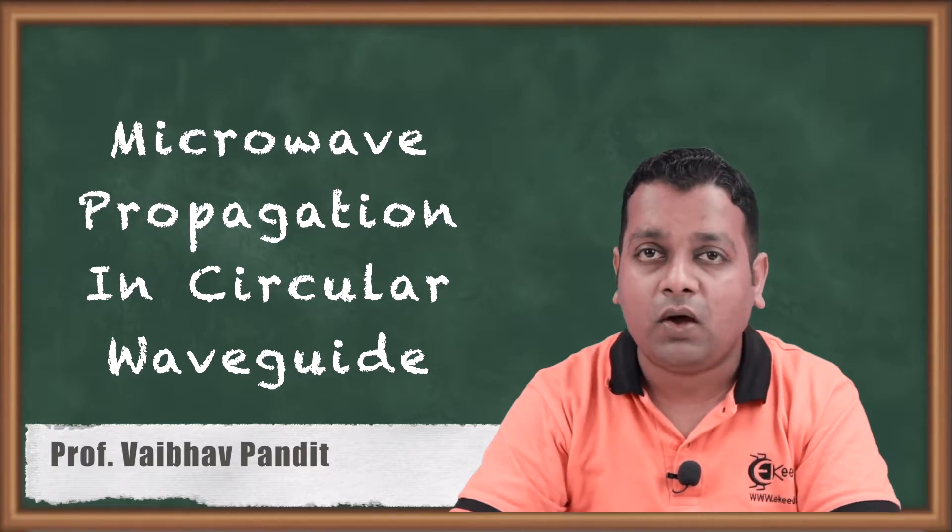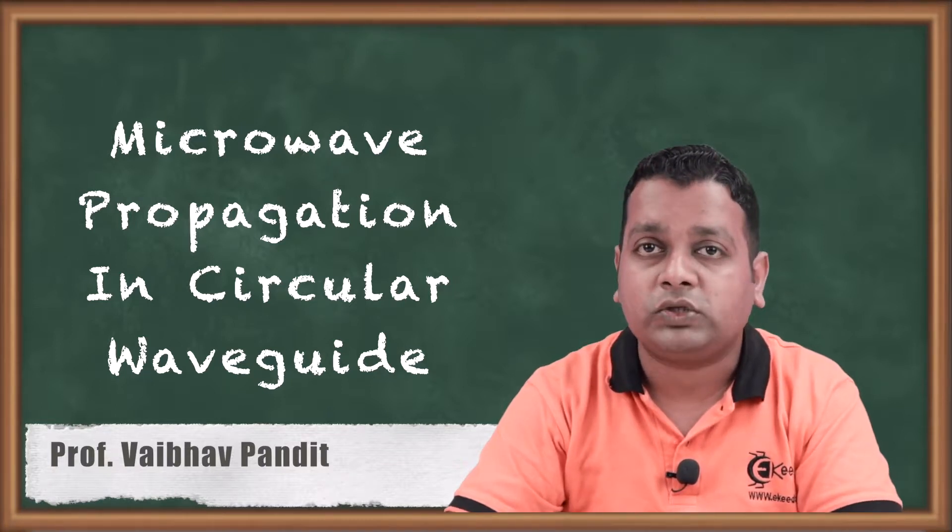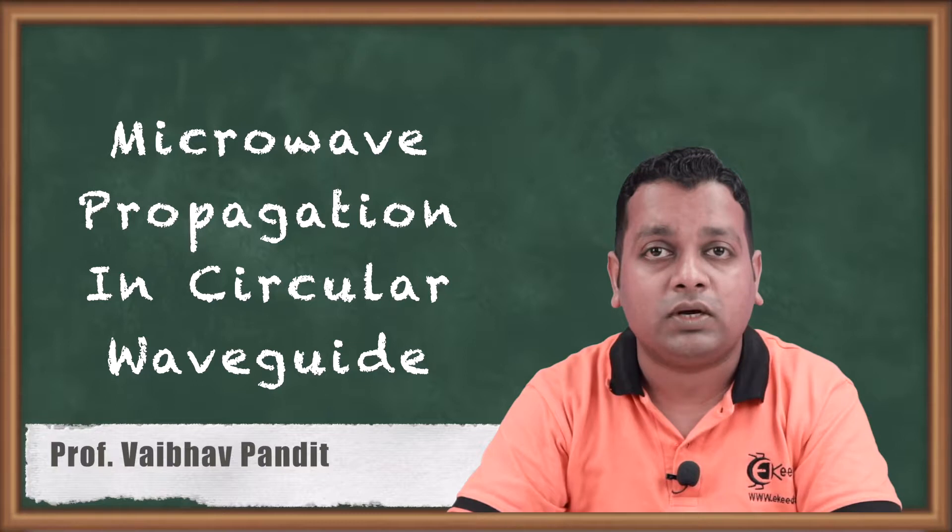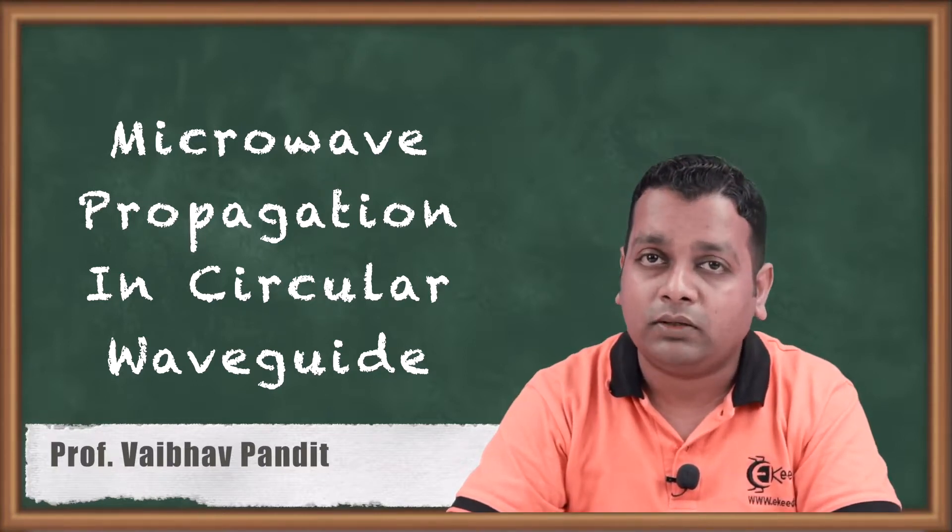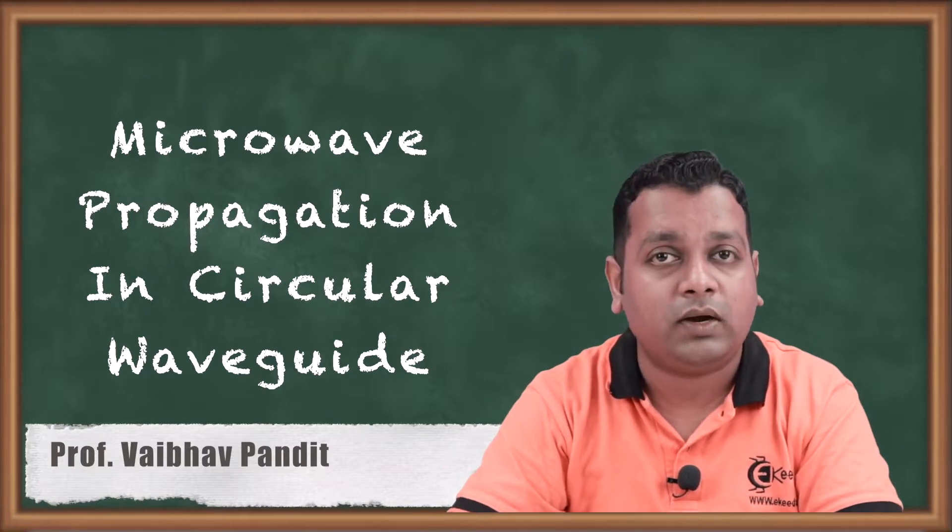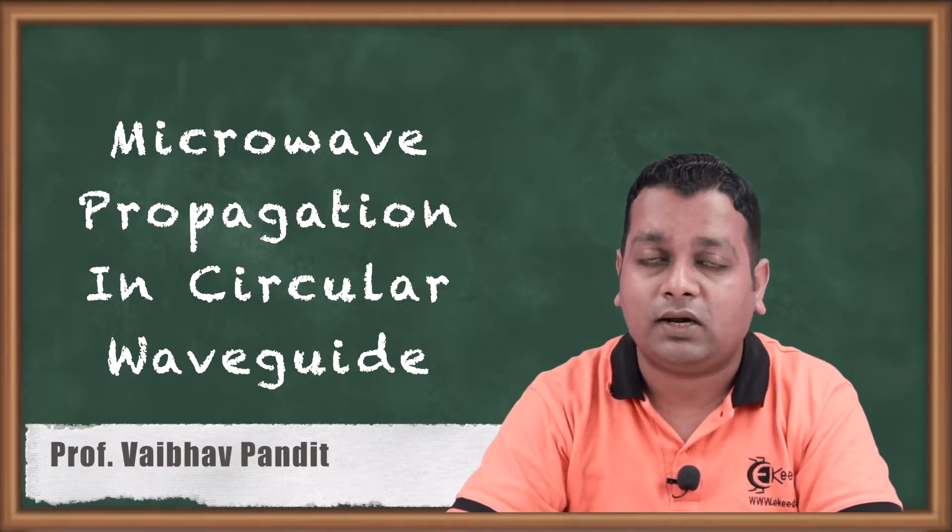In the previous video we have analyzed a scalar function represented phi as spatial parameters rho and phi taking into consideration the cylindrical coordinate system. We have derived it and the further analysis in terms of the field vectors of electric and magnetic field intensities can be extended for coaxial transmission line.